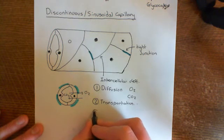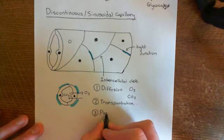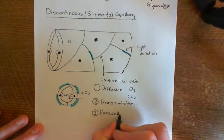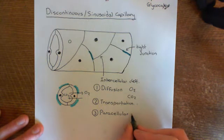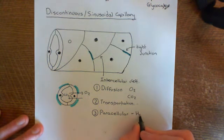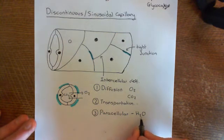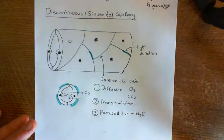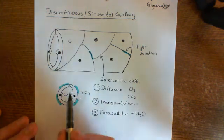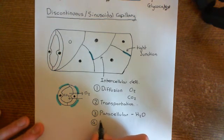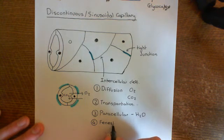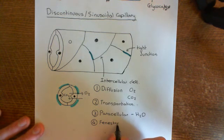The third option is the paracellular route — you can go through the intercellular cleft, these gaps between the cells. The famous example of something that will go through the paracellular route is water, because water is very polar and has a harder time diffusing across the membrane than oxygen and CO2. Fourthly, if you've got a fenestrated capillary, you can also go through the fenestrations, though fenestrated capillaries aren't as common as continuous capillaries.